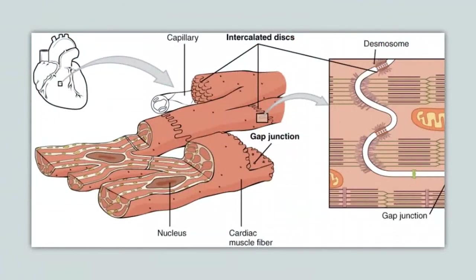Looking at the structure: the cardiac cells have branches, gap junctions, and intercalated discs with strong connections — desmosomes — linking one cell to the other. There are also sarcomeres and mitochondria. When one cell depolarizes, the wave passes through gap junctions into the next cell and the next, producing a coordinated contraction.